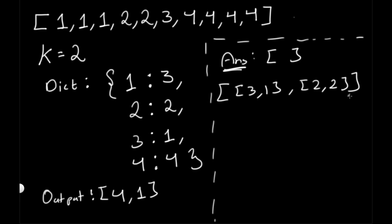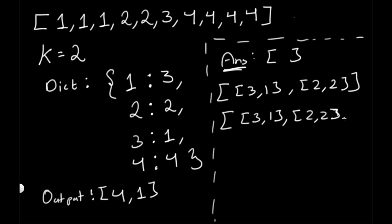Now our answer list has the same length as k, which is 2. For the next element, we use heappushpop — it first pushes the item (1, 3) onto the heap, then pops out the smallest frequency. Comparing frequencies 3, 2, and 1, the smallest is (1, 3), so we pop that out, and our heap retains only the two highest-frequency elements so far.